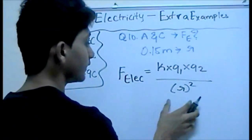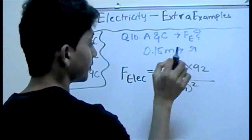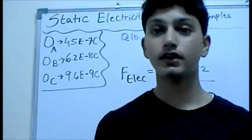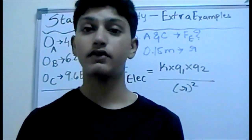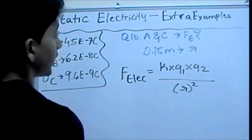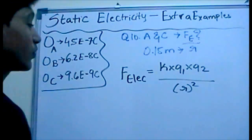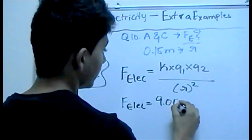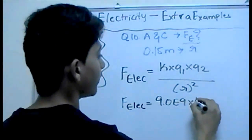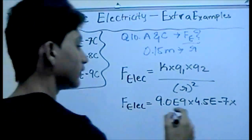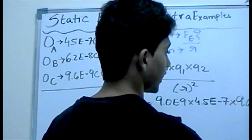Recall the equation we used: the electric force equals the constant times charge 1 times charge 2, divided by the distance squared. We have the distance, the charge of both objects, and the constant, which is always 9.0 × 10⁹. So the electric force equals 9.0 × 10⁹ times 4.5 × 10⁻⁷ times 9.6 × 10⁻⁹.